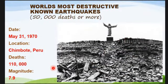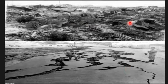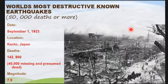On May 31, 1970 in Peru, a 7.9 magnitude earthquake killed approximately 110,000 people. Ground rupture occurred and the affected areas were heavily devastated.